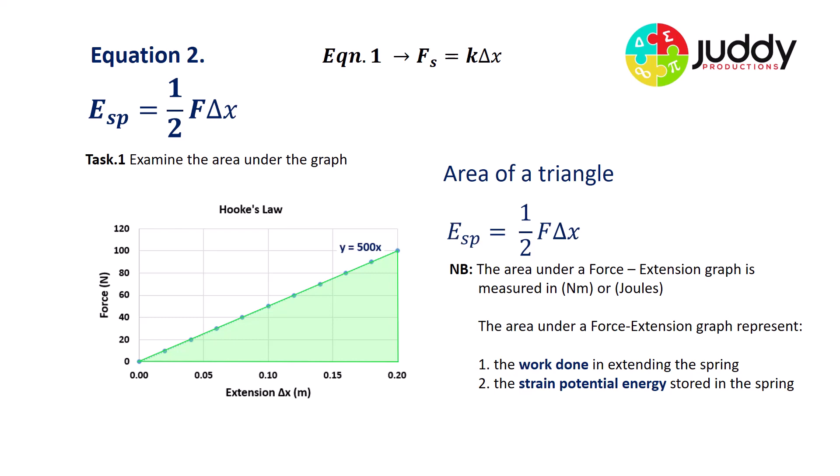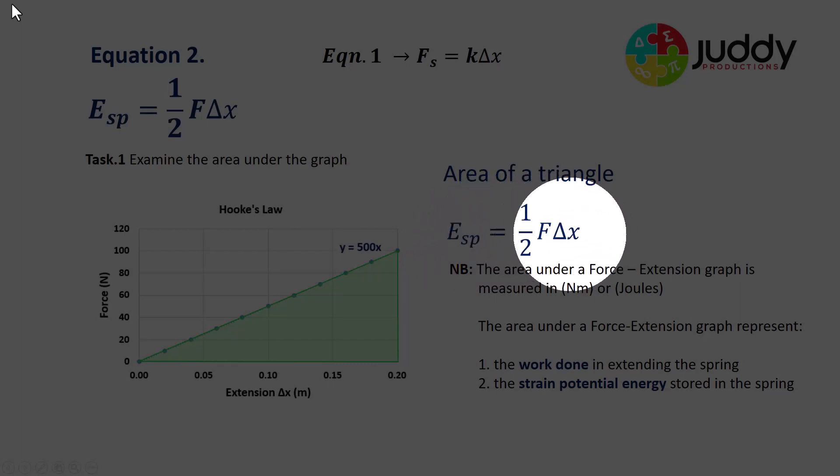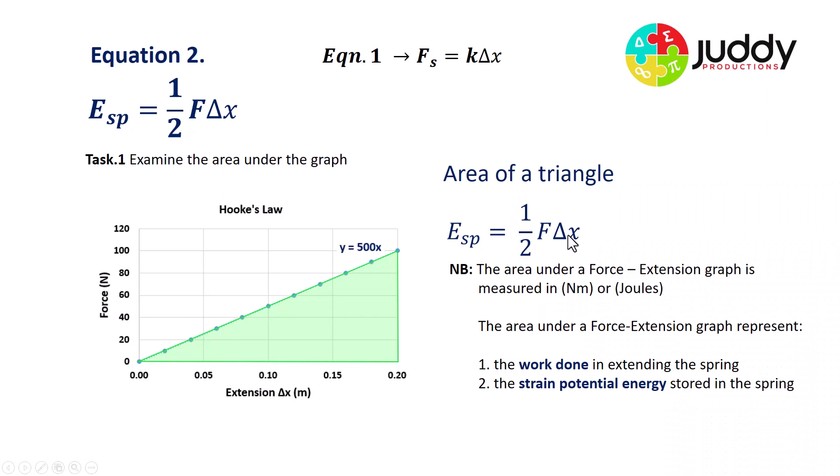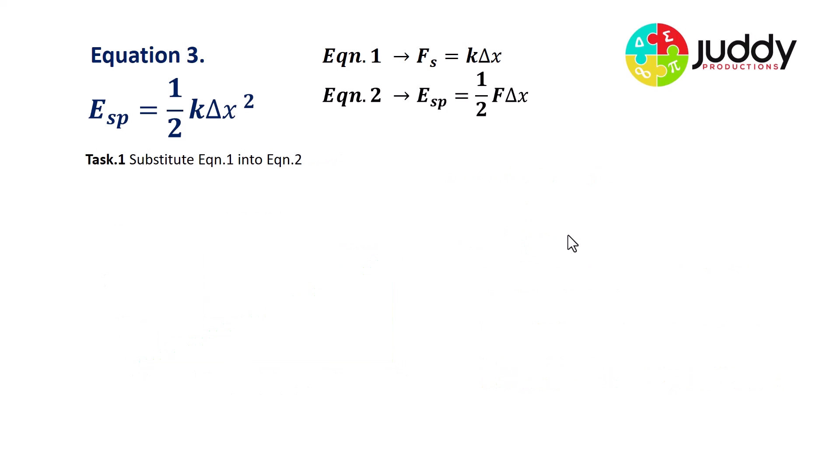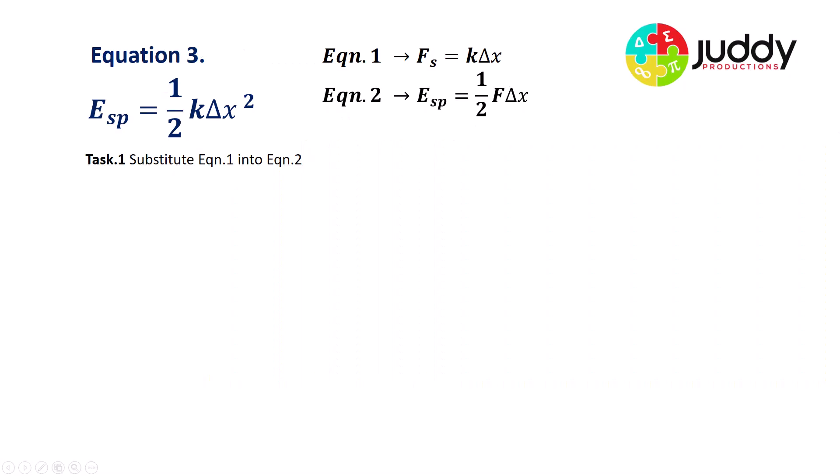So our final part here for equation two, the strain potential energy in the spring is equal to half the force times delta X, the extension. And of course delta X can also be compression if our scenario is a compressing spring. That's equation number two. Equation number three is very simple to calculate. It's a second version of the strain potential energy stored in a spring. The equation we're looking at is again strain potential energy, but this time it's equal to half k delta x squared. This is the most common version of the equation.